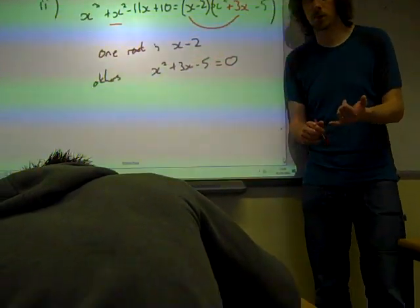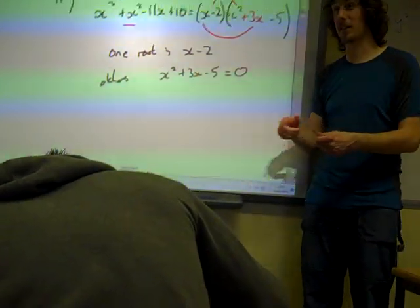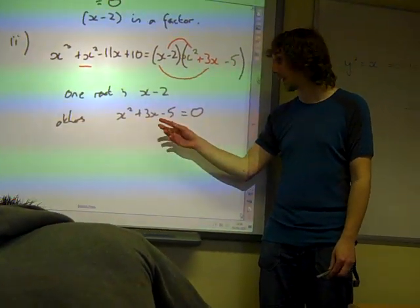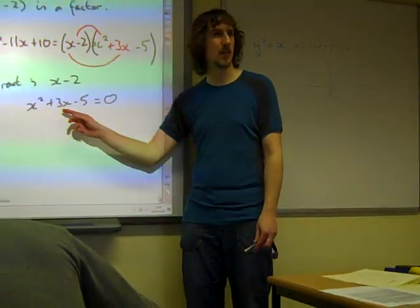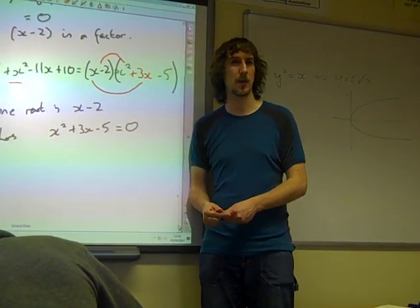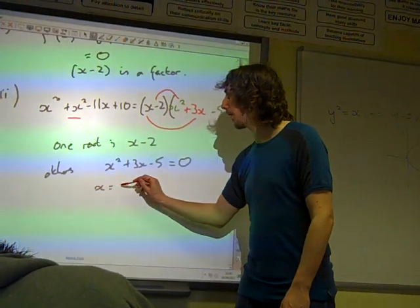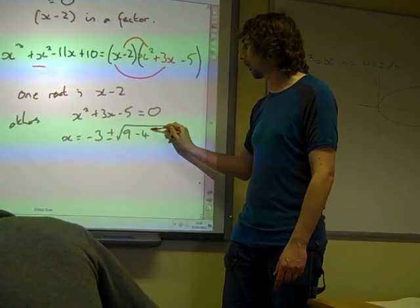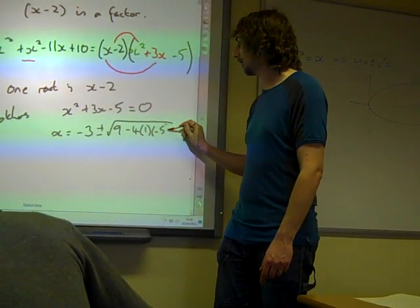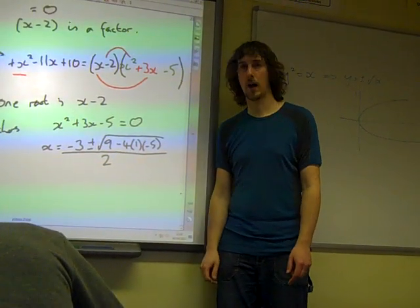We're going to have to go with the formula. Oh we have got another option, we could go with completing the square. It doesn't shout out to me that it's a nice completing the square thing, because an odd coefficient of x doesn't lead to a nice completing the square method. So we're going to go with the formula. x is minus b plus or minus the square root of b squared minus 4ac divided by 2a.